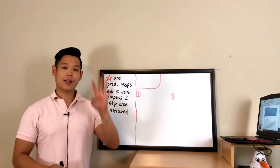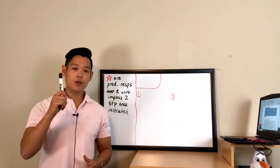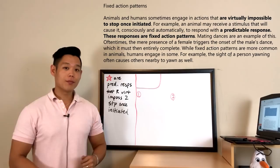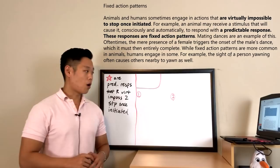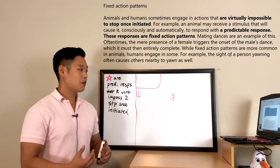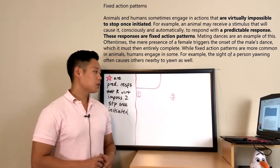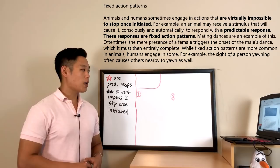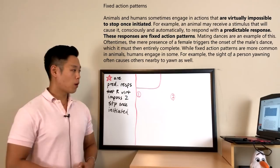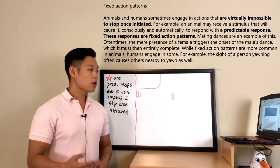The topic for today's Task 4 question is fixed action patterns. Let's look for the topic first within the passage: 'these responses are fixed action patterns.' 'These responses' tells us the definition was already given, so let's read the first two sentences. Animals and humans sometimes engage in actions that are virtually impossible to stop once initiated. For example, an animal may receive a stimulus that will cause it to automatically respond with a predictable response. So fixed action patterns are predictable responses that are virtually impossible to stop once initiated — there's the definition.